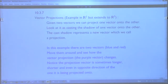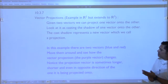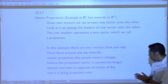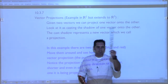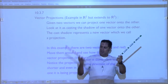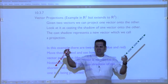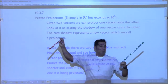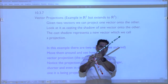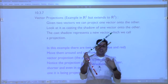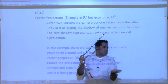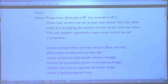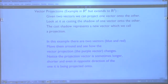Moving on, we're going to talk about vector projection, which is a very useful idea. I'll show you an animation. If we have a vector in three-dimensional space, it can point in any direction with a certain length. If we have another vector and attach them tail to tail, we can project one onto the other. It's easier to see in two-dimensional space, but we can do it in three dimensions.